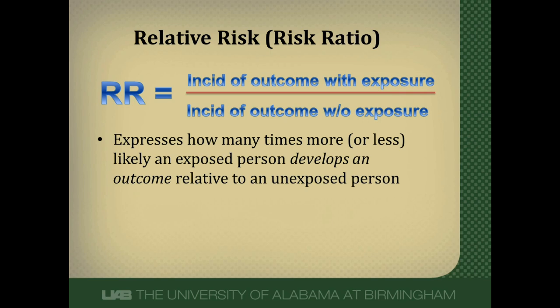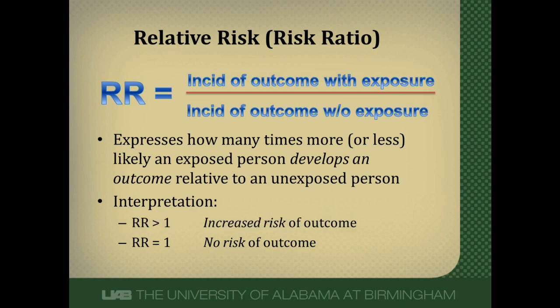A relative risk or risk ratio expresses how many times more or less likely an exposed person is to develop the outcome relative to an unexposed person. If the relative risk is 1, there's no risk difference because the numerator and denominator are exactly the same. Greater than 1 means increased risk; less than 1 means reduced risk of the outcome in exposed persons.